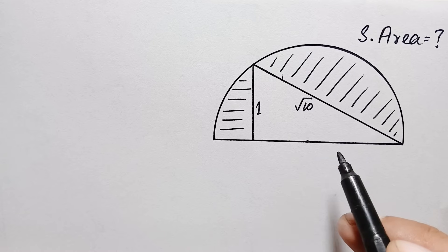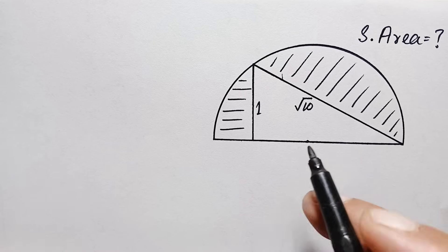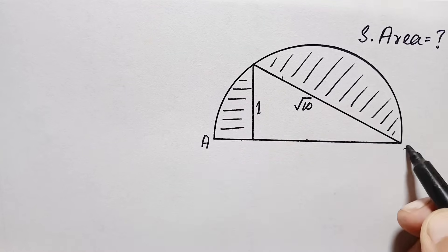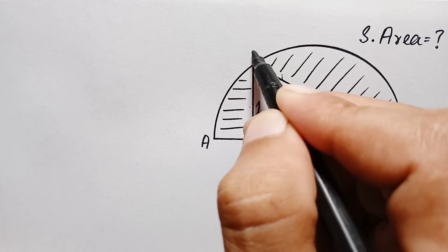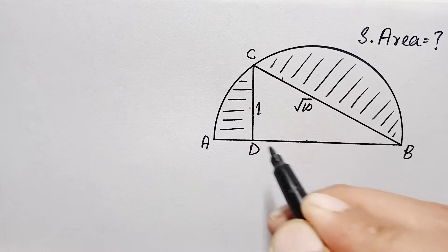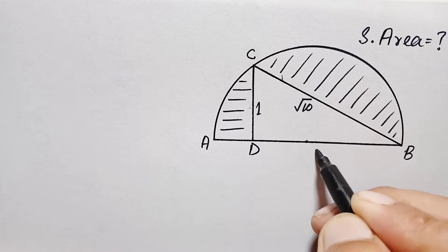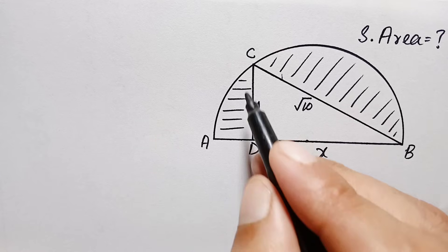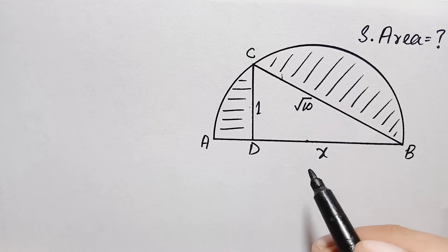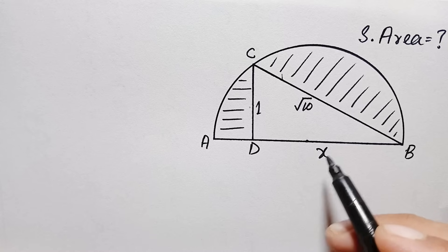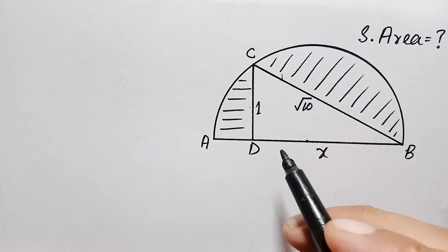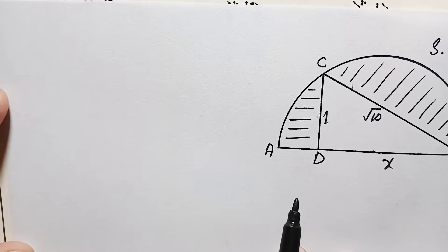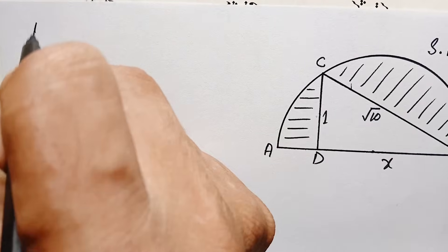Here we need the length of the third side of the triangle. Let us label the figure with points A, B, C, and D, and suppose this unknown length is equal to x. Looking at triangle BCD, this is a right angle triangle, so we can find x using the Pythagorean theorem.